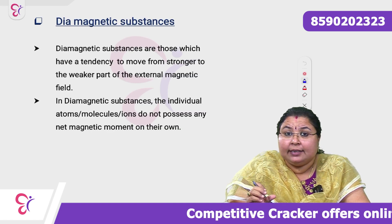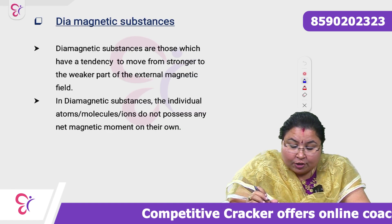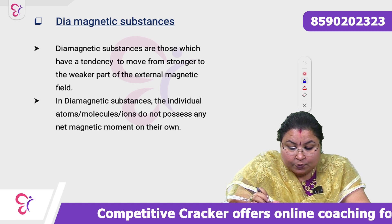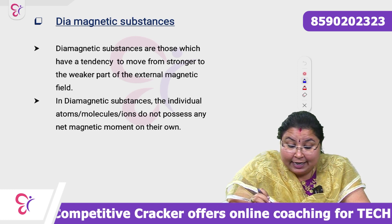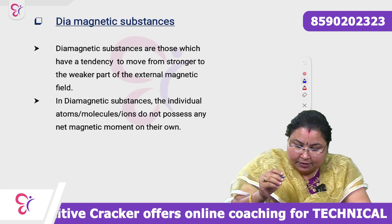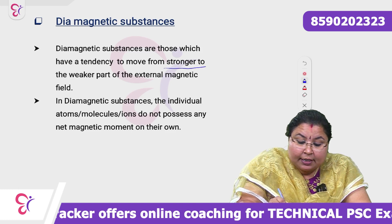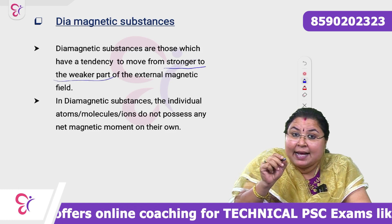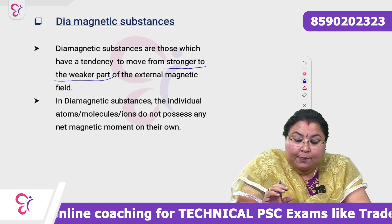First, diamagnetic substances are those which have a tendency to move from the stronger to the weaker part of the external magnetic field — from the stronger portion to the weaker portion when placed in an external magnetic field.